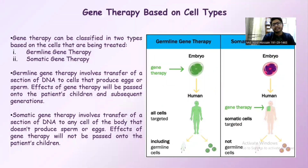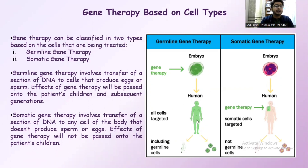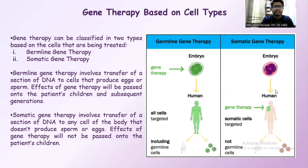Gene therapy can be classified into two types based on the cells being treated: germline therapy and somatic therapy. In germline therapy, gene therapy is applied to the embryo so that the full human body does not carry the mutation. In somatic gene therapy, a specific portion of the body carries the mutation, so gene therapy is applied only to that specific portion.